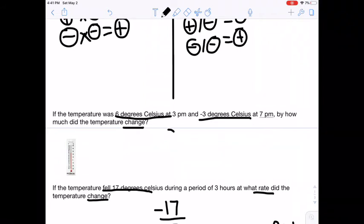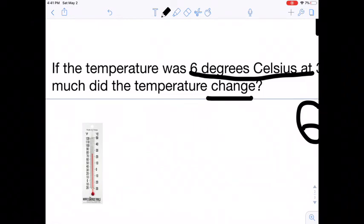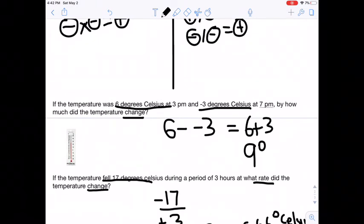So we do six minus the negative three. And this is also equal to six plus three, because these two negatives become a positive, which ultimately is nine degrees. So fun fact, nine degrees Celsius is actually a lot. Even though most of you are used to dealing with Fahrenheit, if you look over here at the thermometer, you can see just how much of a difference it is. And dropping this much in four hours is a lot.